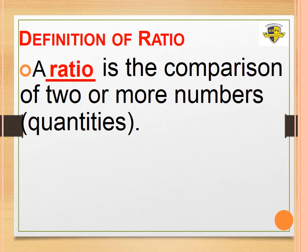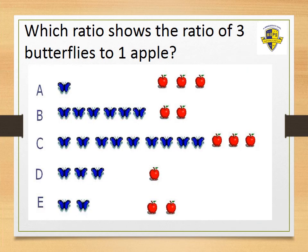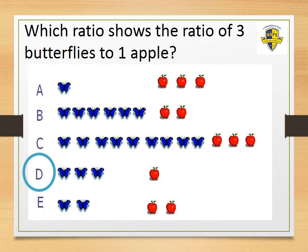A ratio is a comparison of two or more numbers or quantities. We have this question: which ratio shows the ratio of three butterflies to one apple? We have three butterflies and one apple. The answer is D — D represents the ratio of three to one.